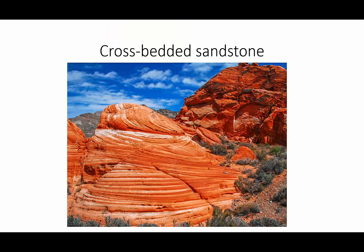Even without fossils, rock layers hold clues to their origins. Sandstone from sand dunes may have distinctive layers called crossbedding. These beautiful layers seen in the Aztec Sandstone tell us that this area of Nevada was once a vast desert full of sand dunes.